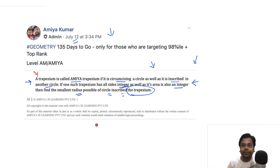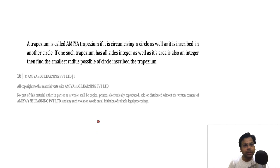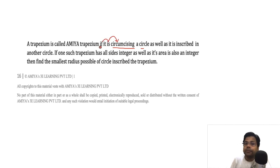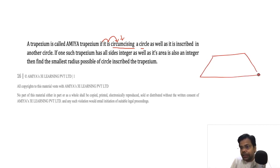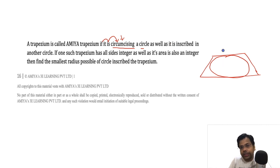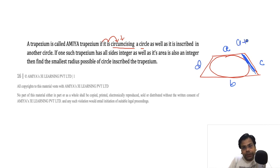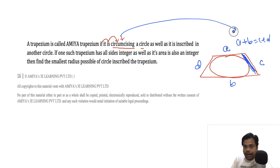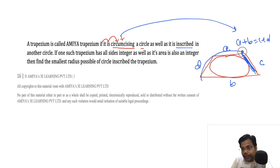First of all, let me discuss each and every concept. A trapezium circumscribing a circle means the trapezium is outside the circle, making all sides tangents. So if the sides are a, b, c, d, then a plus b equals c plus d. This is the first key property.